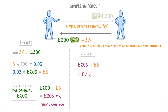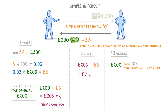This technique is pretty good if you just have very low numbers — 1 year, 2 years, 3 years, and so on. But if they ask for a much longer period, like 10 years, then we might need to use a slightly different technique. For this, we could still take the original £200, but this time we'd need to add 10 times the annual interest, because they're borrowing it for 10 years. So £200 plus 10 times £6, giving us £200 plus £60, or £260 in total.